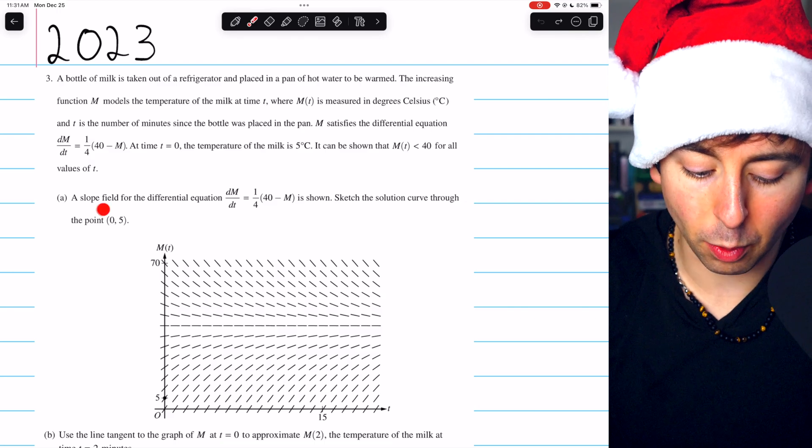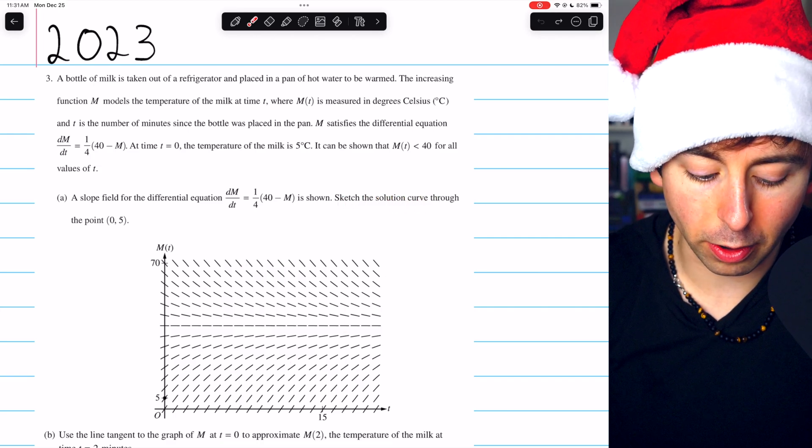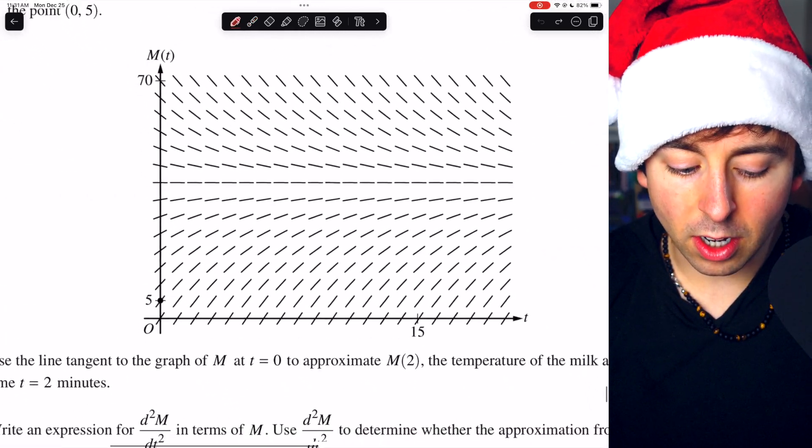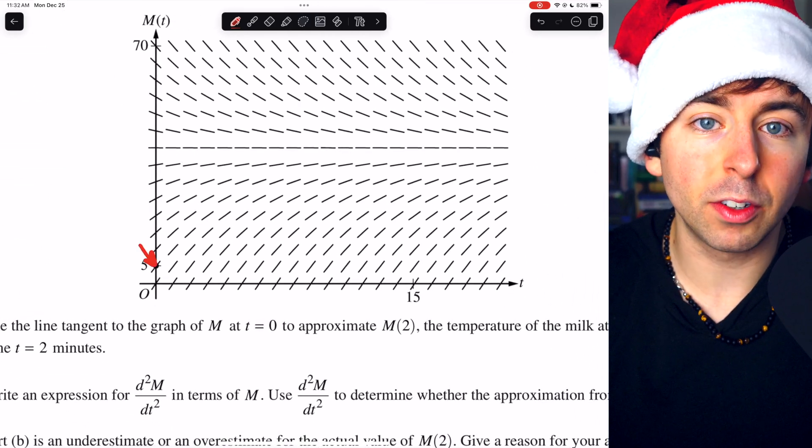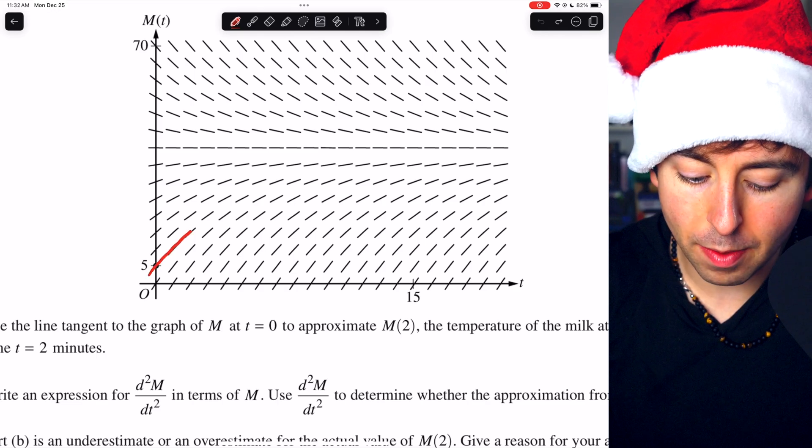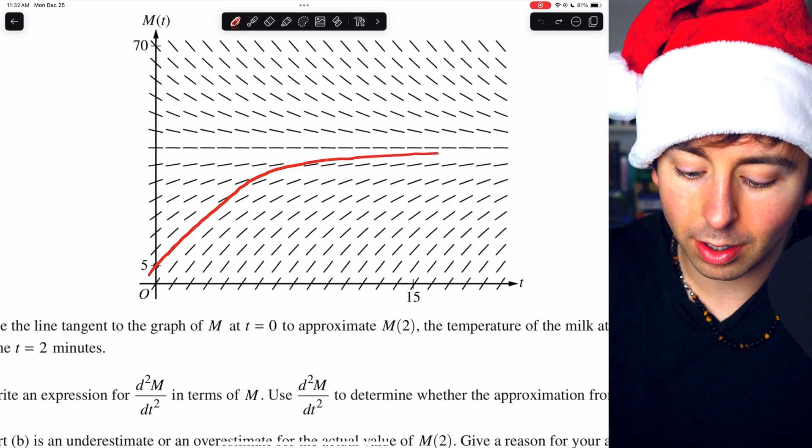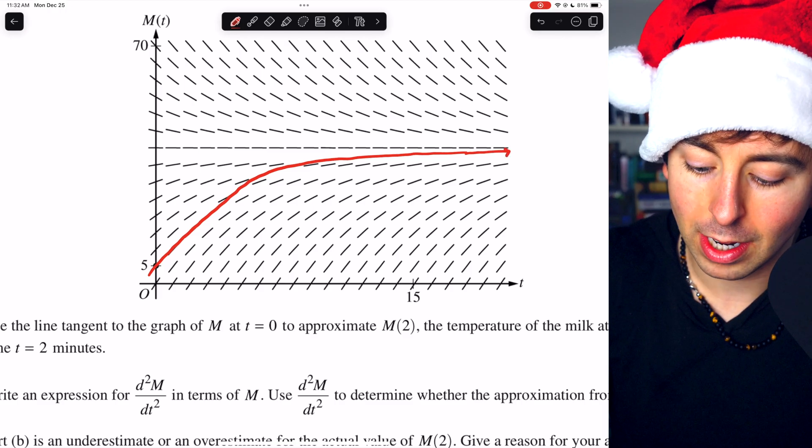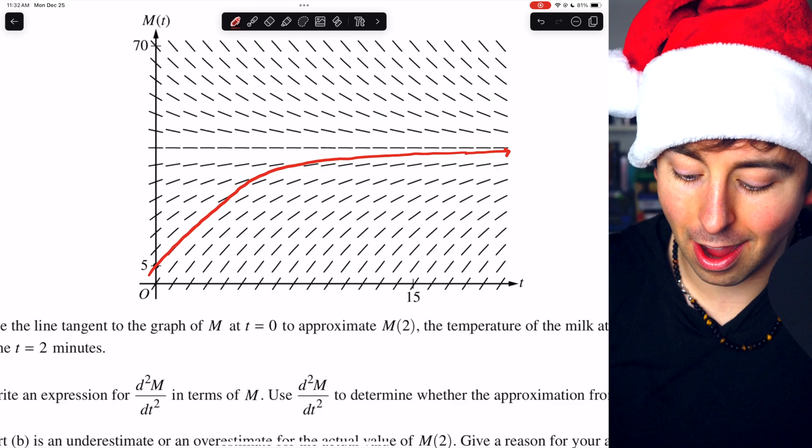Part A. A slope field for the differential equation is shown right here. We are asked to sketch the solution curve through this given initial condition (0, 5). Notice that this point (0, 5) is already labeled on the picture for us. We just have to sketch the curve that is in agreement with the slope field, something like this. It's got sort of a horizontal asymptote around M equals 40. The rate at which it is increasing is getting very slow as time goes on.